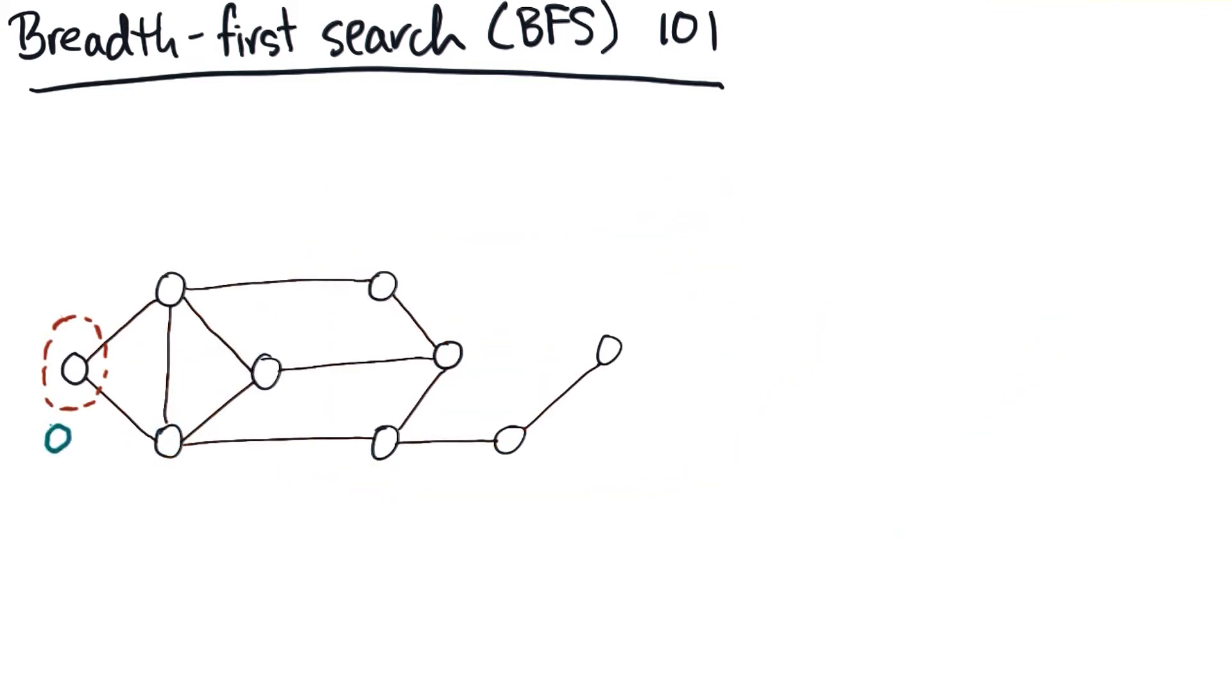The way a BFS works is a little bit like dropping a drop of water into a bucket. The drop hits the source, and that causes a ripple of waves through the graph, where we propagate the distances. These waves are sometimes called frontiers.